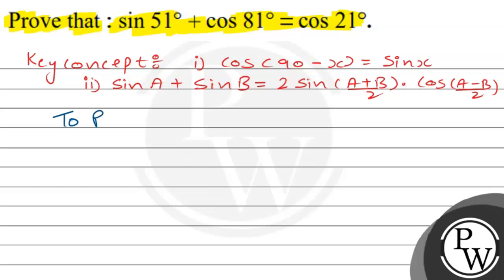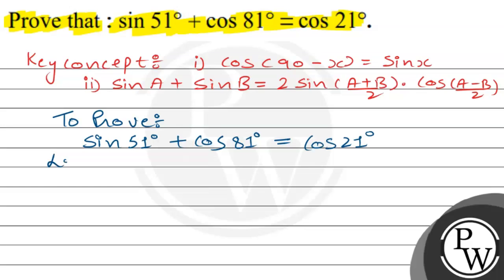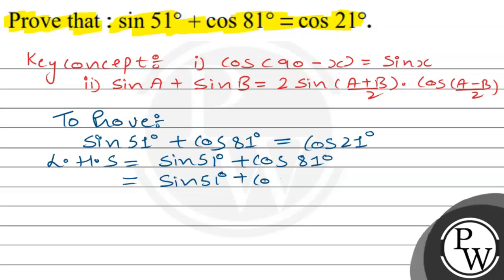We have to prove sin 51° + cos 81° = cos 21°. We will start with the left-hand side, which equals sin 51° + cos 81°. We can write cos 81° as cos(90° − 9°).